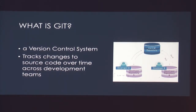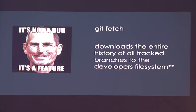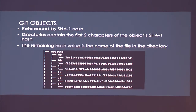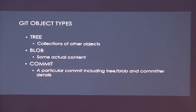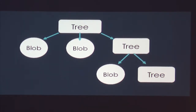Git is version control — if you don't know what that is, ask me later. A Git fetch downloads an entire history. The Git database lives inside the .git folder. If you look inside the objects directory, Git objects are referenced by SHA1 hashes — the first two characters of the hash are the directory name, and the remaining part is the file name. We have three different types: trees that contain other objects, blobs that are the actual content of your source code, and commits. This creates a structure that is very easy to walk using software.